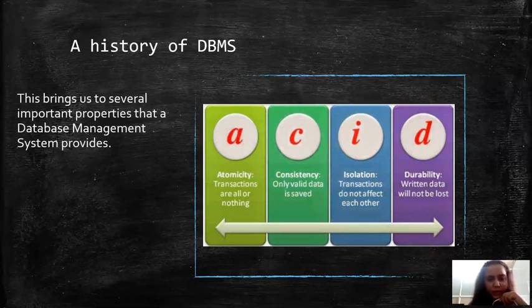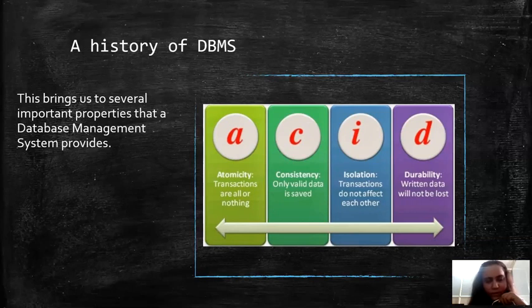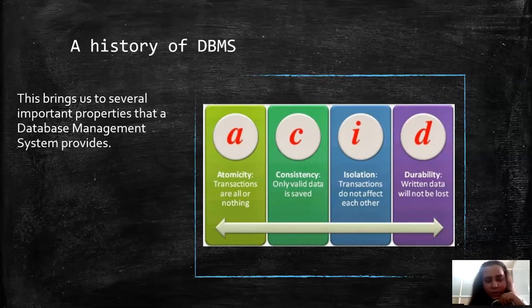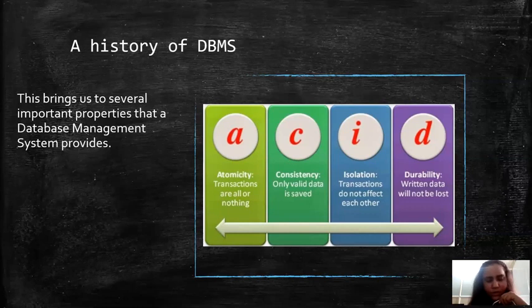All these are different problems with using simple file systems, which is why we have to use a database management system which provides you with four important properties: Atomicity, Consistency, Isolation and Durability, known as the ACID properties. Atomicity states that transactions are either completed fully or not completed at all. Consistency is maintaining the correctness of the database. Isolation makes sure that when two transactions are happening at the same time, they should not affect each other.